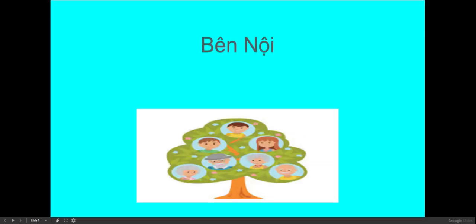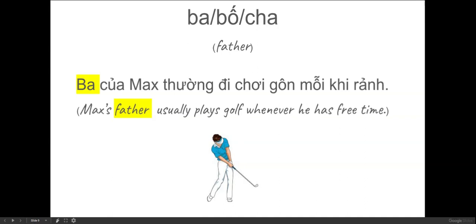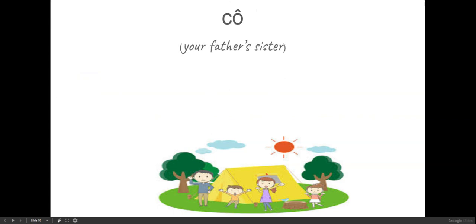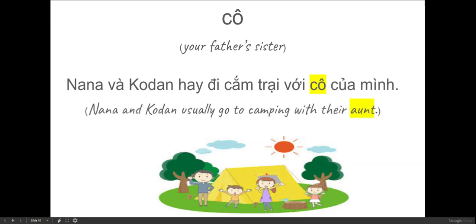Now let's review the familial terms on the paternal side, which is your father's side. Ba, bố, or cha means father. For example, ba của Max thường đi chơi golf mỗi khi rảnh — that means Max's father usually plays golf whenever he has free time. Cô means your father's sister. For example, Nana và cô Đình hay đi cắm trại với cô của mình — that means Nana and cô Đình usually go camping with their aunt.